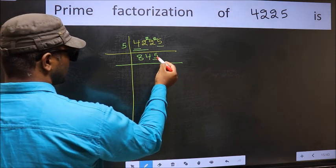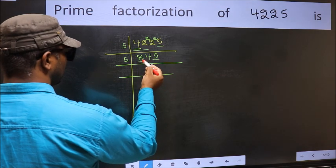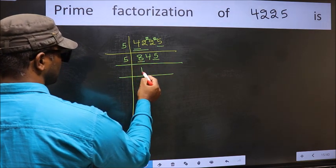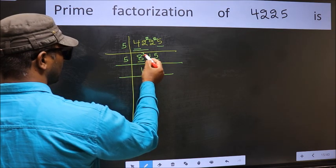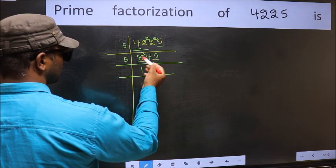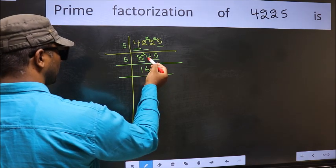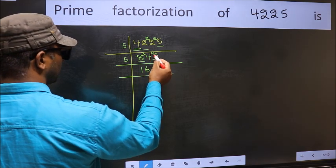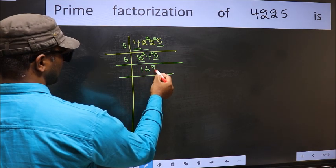Now the last digit is 5, so take 5. First number 8. A number close to 8 in the 5 table is 5 1s, 5. 8 minus 5, 3 carried forward, 34. A number close to 34 in the 5 table is 5 6s, 30. 34 minus 30, 4 carried forward, 45. When do we get 45 in the 5 table? 5 9s, 45.